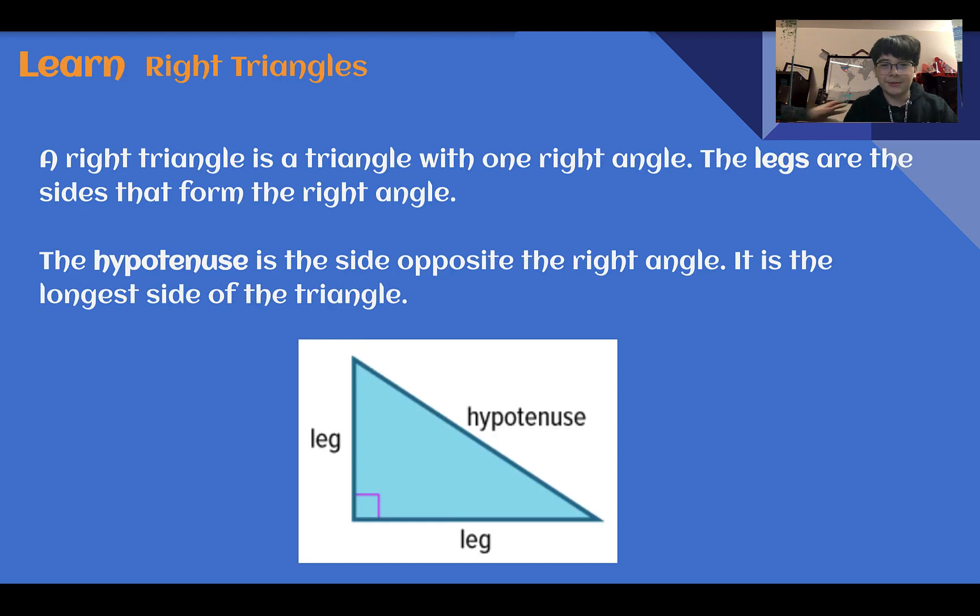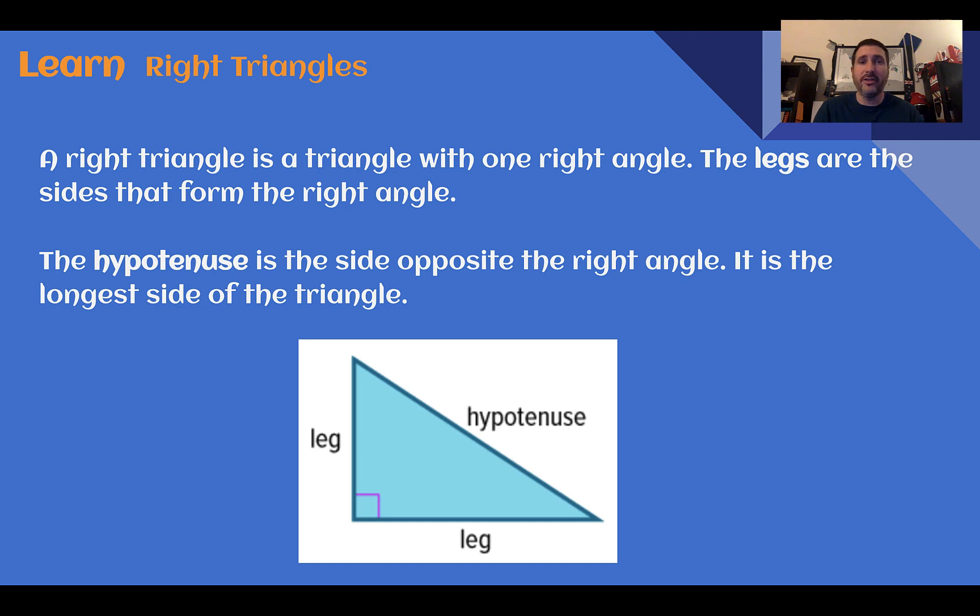A right triangle is a triangle with- Hey, get out of here! Sorry about that, not sure how he got in here. Anyway, let's learn.